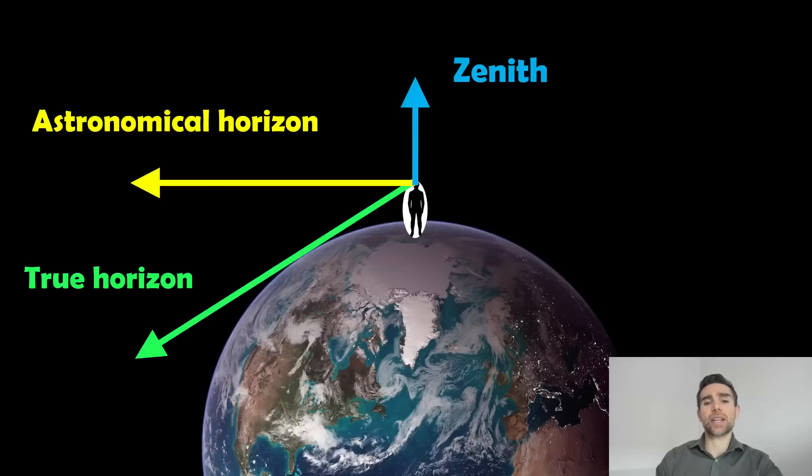Now, in a separate video I explained kind of what the zenith was and nadir, but these are basically the locations directly above us. So if we're standing on the surface of the Earth, directly above us at an altitude of 90 degrees is the zenith. Now, directly below us would be the nadir, so that's kind of like a minus 90 degrees altitude, that will be the nadir.